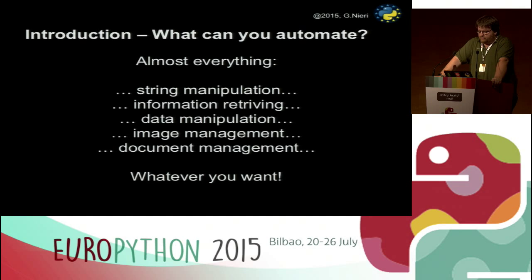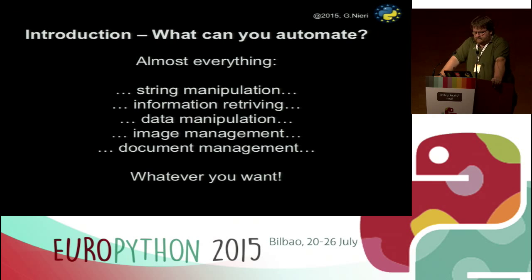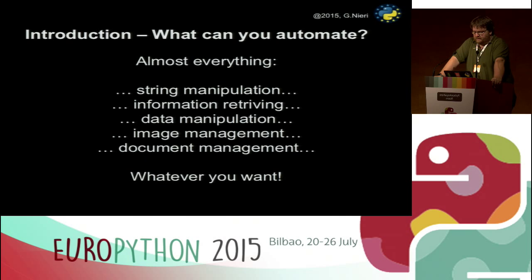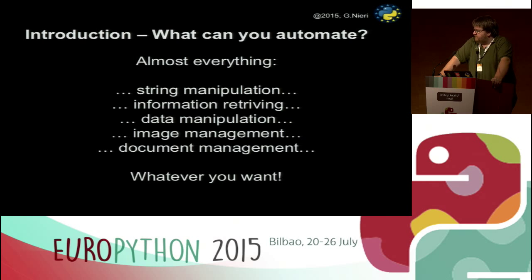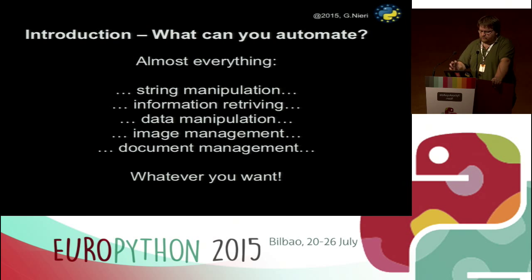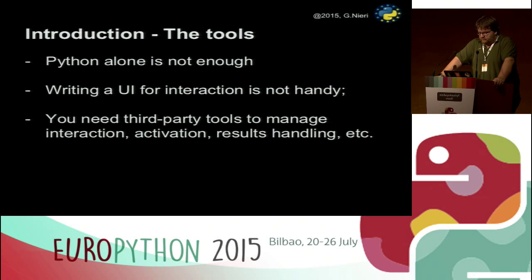So what can you automate? Fundamentally, whatever you want. Some ideas: string manipulation — we'll see it later; information retrieval — you can automate how to retrieve, manipulate, and reformat data; image management — we'll see how it's possible to easily manage images for rotation, resizing, or whatever you want; and document management — if you often produce the same documents with only small changes, you can automate the mixing of data inside a document and produce new documents.